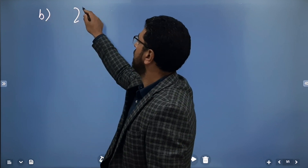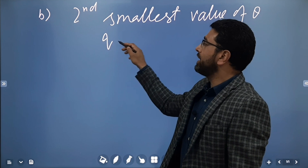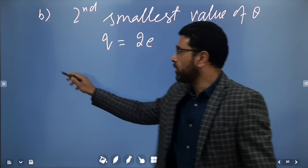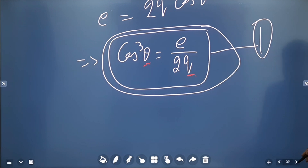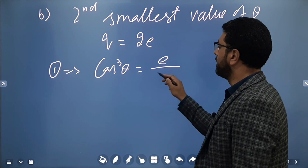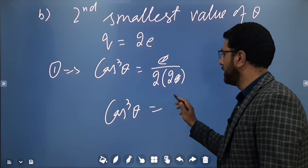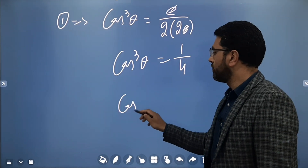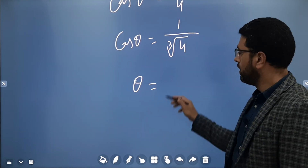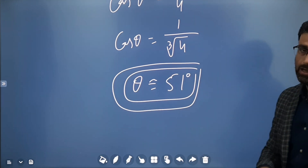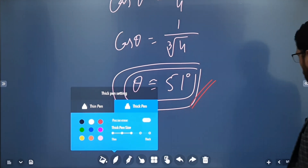Part B — second smallest value of theta. We take the second smallest value of Q, which is 2e. Equation 1 gives cos³θ = e / (2 · 2e) = 1/4. So cosθ = 1 / (cube root of 4), and theta is approximately 51 degrees. This is the second smallest value of theta.